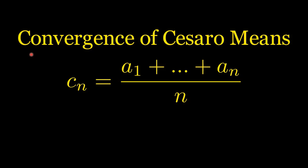Hi, I am Sofiane Makhlouf. In this video, we will study the convergence of Cesàro means, which is C sub n equals the sum of A sub 1 plus and so on until A sub n, all over n. So C sub n is the Cesàro mean of the sequence A sub n.